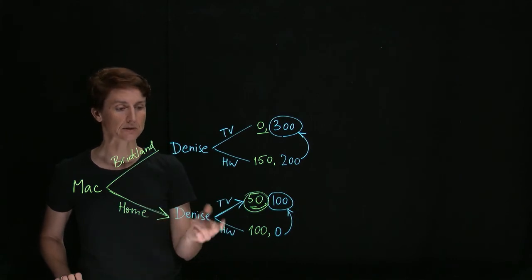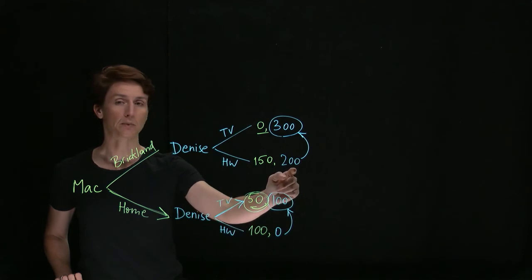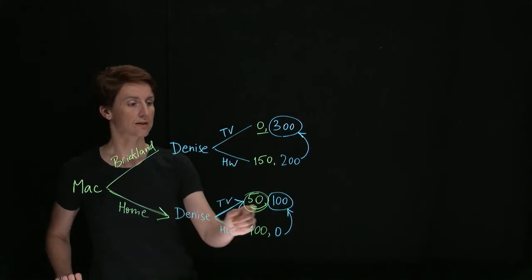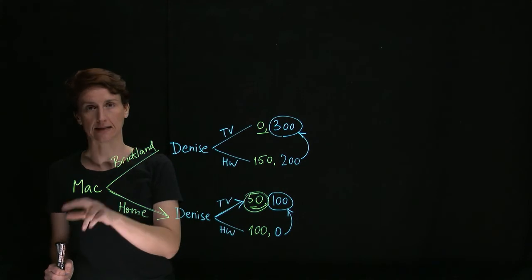So every future time this situation comes up, she will get the benefit of being in this outcome rather than this. So the value of that promise is her future expected surplus from having her dad trust her.